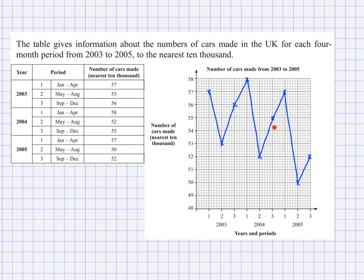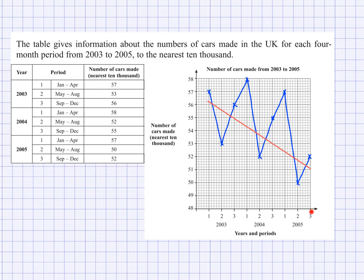This is my completed time series graph. What I can do now is draw a trend line. I can see this is a decreasing or downward trend. Roughly, by eye, I go through the middle of the points. My trend line goes roughly here — I haven't gone too far beyond the first season on the left, and it extends to season three of 2005. This clearly shows a downward trend.